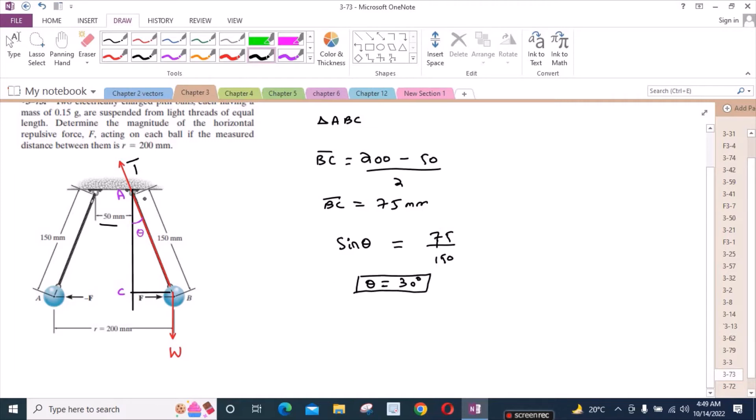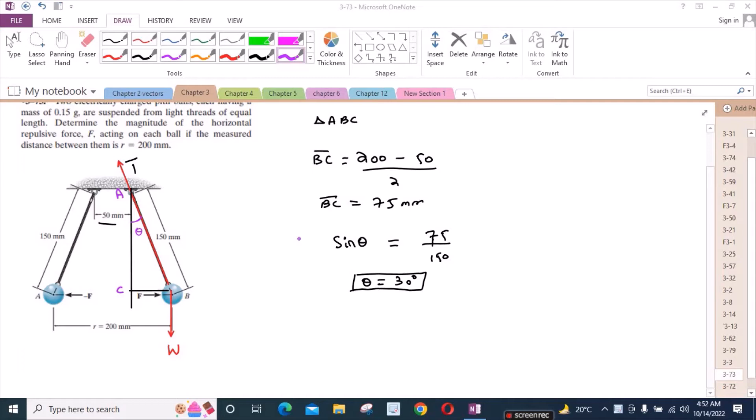Now theta is equal to 30 degrees. I can resolve this tension force into two components. If I reduce the length of this tension force to draw its components, then I have one vertical component and one horizontal component. This is the tension force T. This angle is also theta because it is alternate to this angle right here. This is T cos theta and this one is T sin theta.